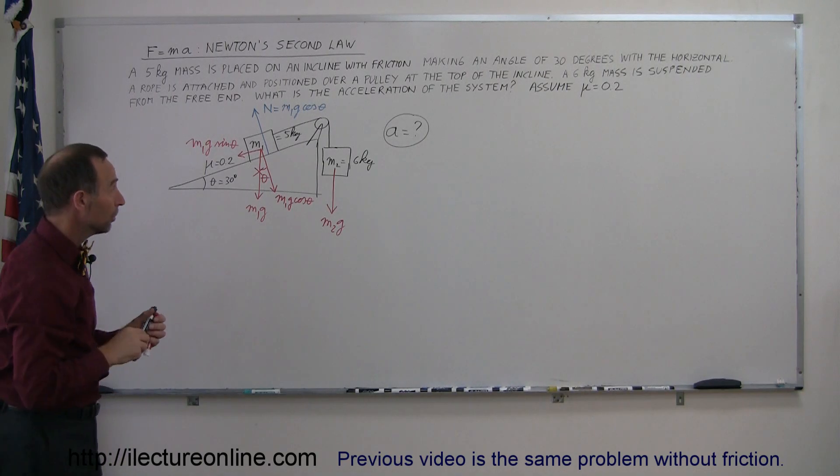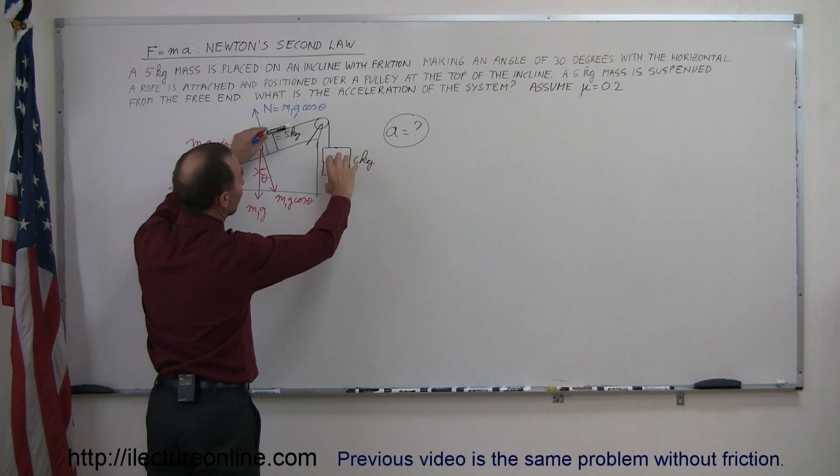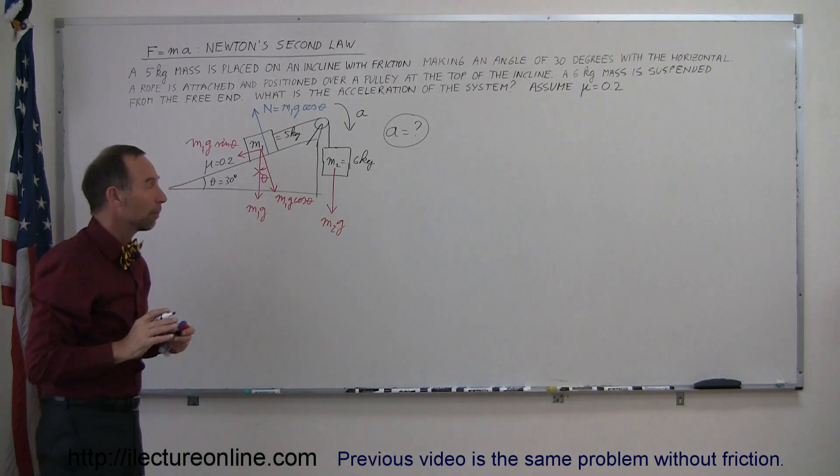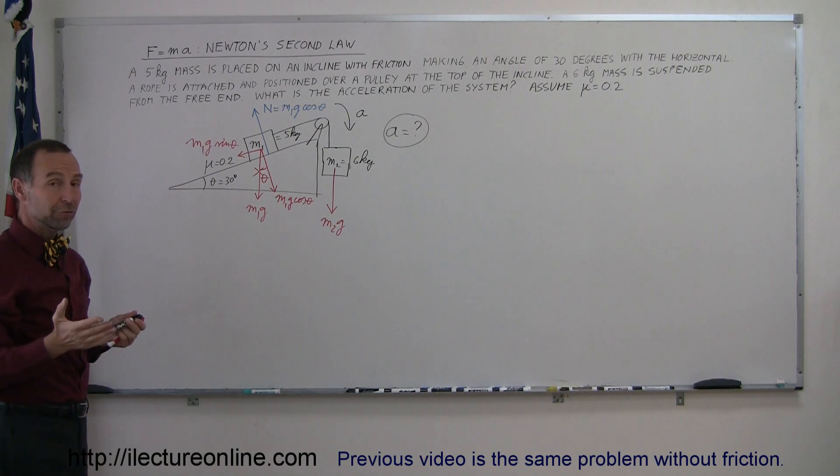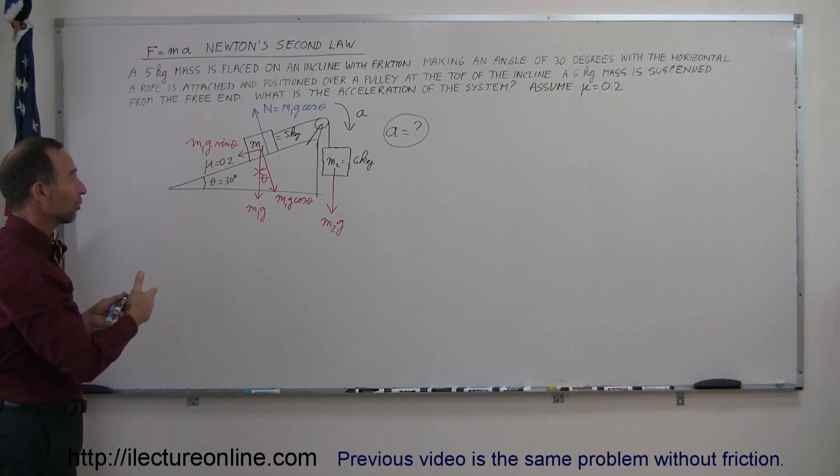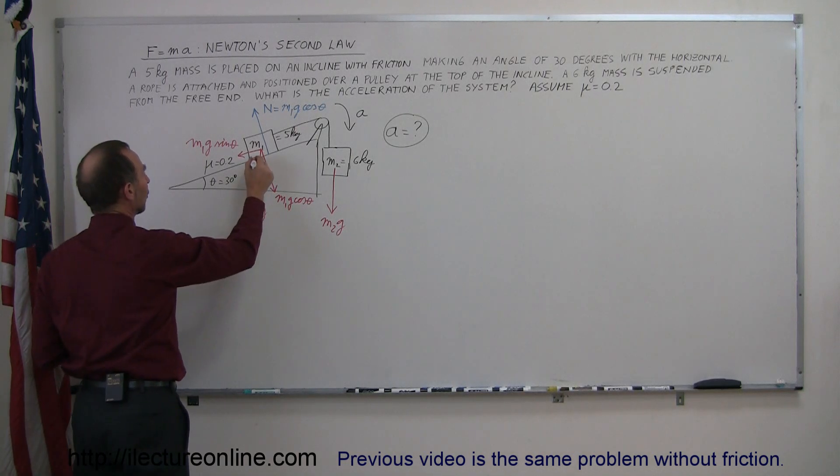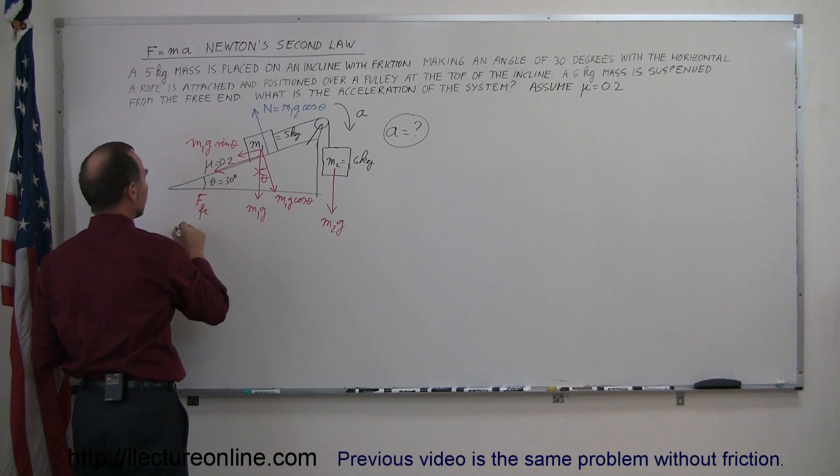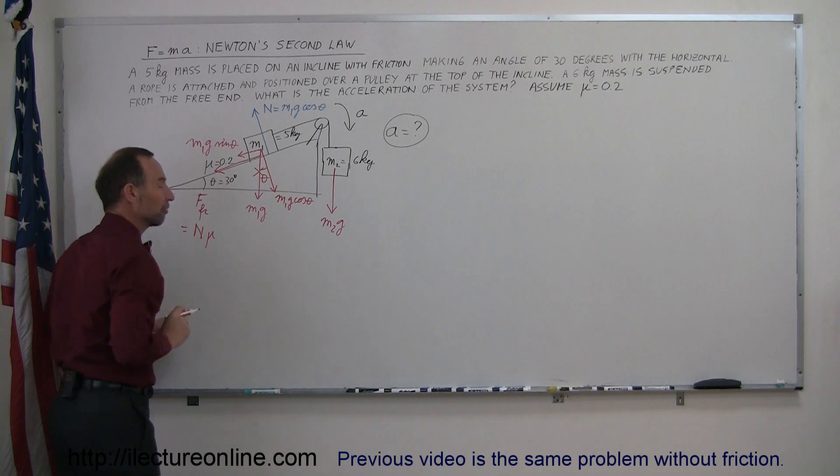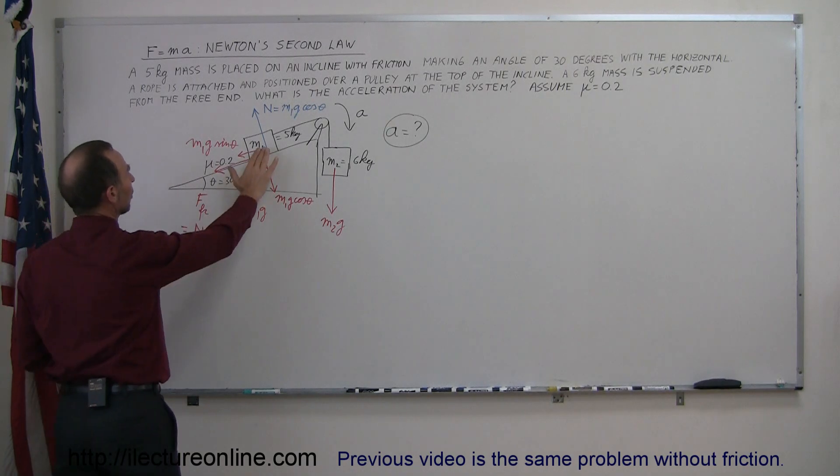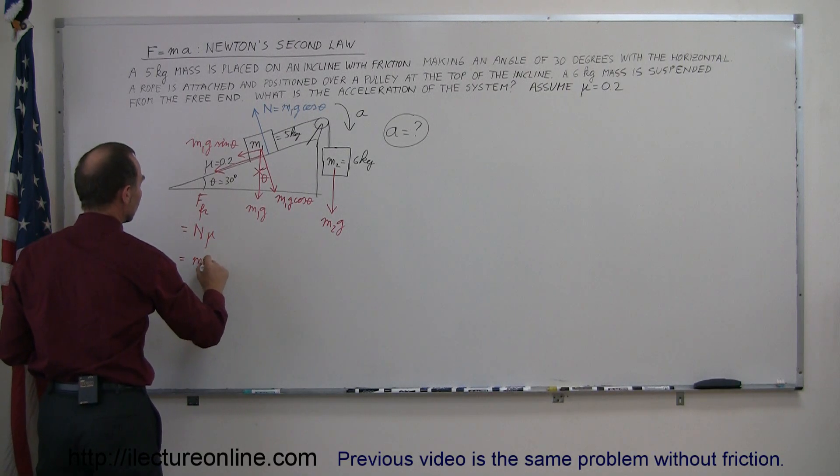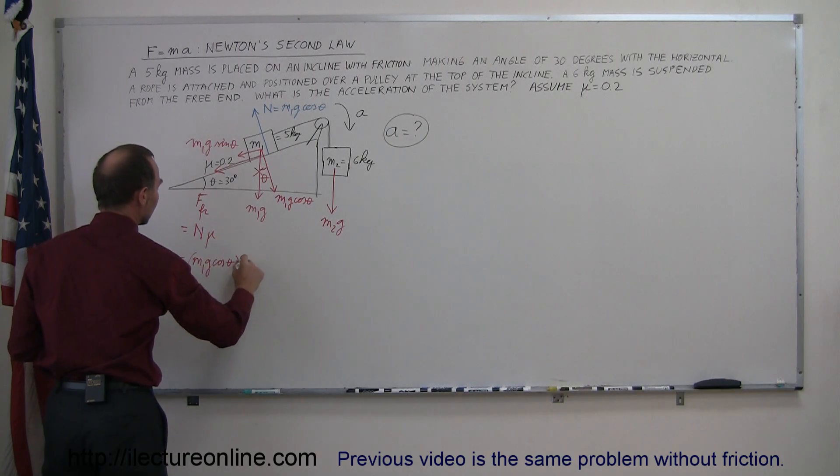We're going to assume that this mass is big enough to cause the whole system to accelerate in this direction. In other words, we assume a will be in this direction, that will be our positive direction of motion. The friction force typically opposes the direction that the whole system will move in, or accelerate in, without the friction. Which means we can then assume that the force caused by friction will be directed downward. Force friction, which is equal to the normal force times the coefficient of friction by definition. Since the normal force causing this friction is equal to m1g cosine theta, we can say that the friction force is m1g cosine theta times mu.